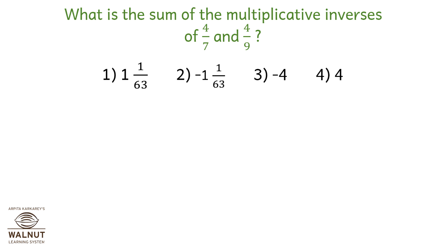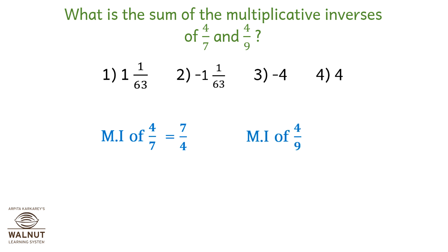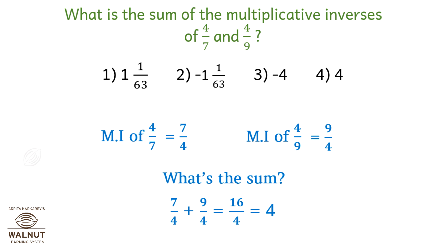Let's see an example. What is the sum of the Multiplicative Inverses of 4 upon 7 and 4 upon 9? The Multiplicative Inverse of 4 upon 7 is 7 by 4, and the Multiplicative Inverse of 4 by 9 is 9 by 4. The sum is 7 upon 4 plus 9 upon 4, which is 16 by 4, which equals 4. So option number 4 is the correct answer.